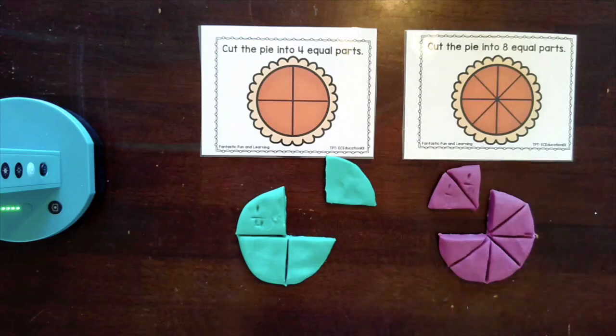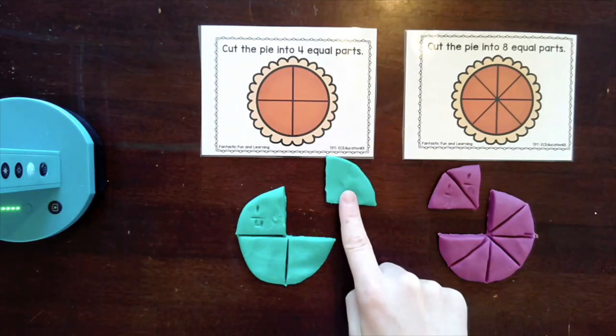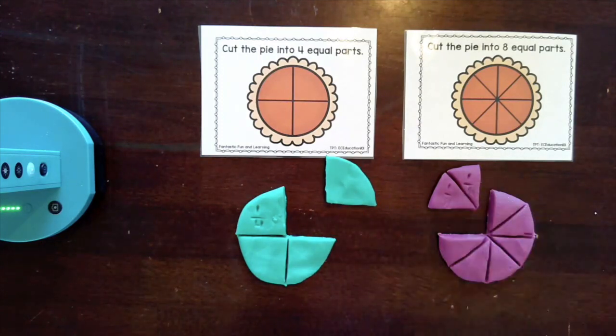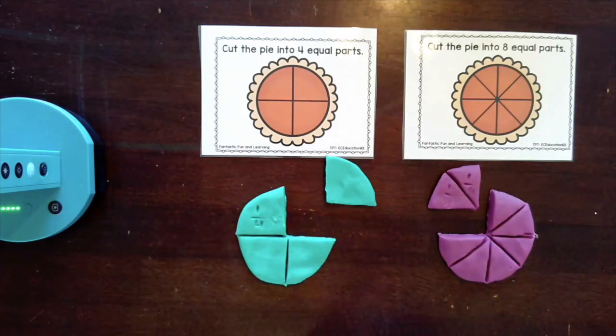But what these are called are equivalent fractions. So even though they may look a little different, they have the same value. One quarter is the same as two eighths. And you can see that when you look at it as a part taken away from the whole.